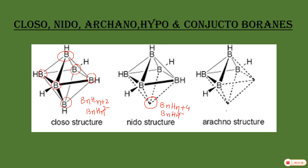Now we move toward the Arachno structure. Here two vertices, or two corners where boron atoms are present, are missing. The general formula for Arachno structure is BnHn+6, or we can write it as BnHn⁶⁻.